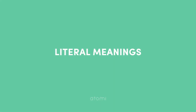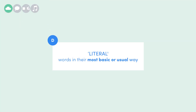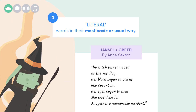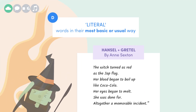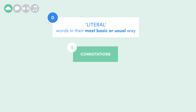First and most simply, let's talk about literal meanings. If I say something literally, I use words in their most basic or usual way. Literally speaking, our passage here is describing the moment the witch burns to death in the oven. But what else can we say about that? There's not a huge amount of room for analysing literal meanings, but there is some.